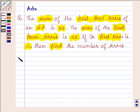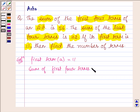Let's now start with the solution. We are given that the first term, let us denote it by small a, is equal to 11. And the sum of first four terms is equal to 56.